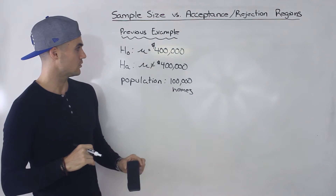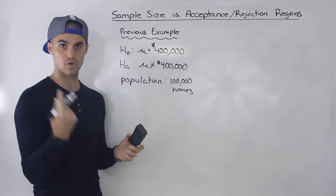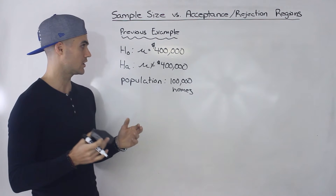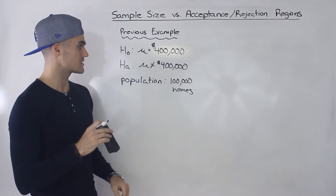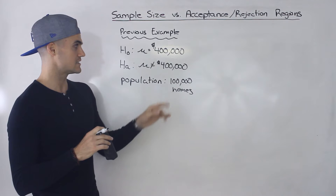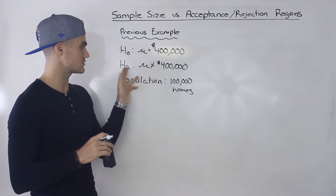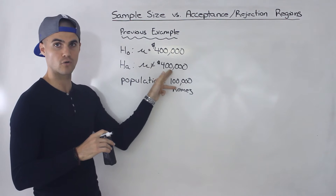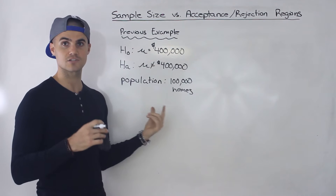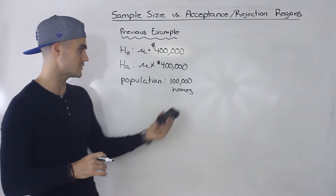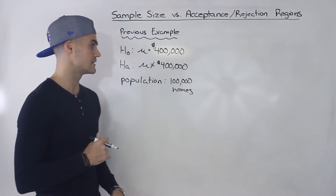In the previous example, we said that the null hypothesis for the average price of a home in a population in a country was $400,000 — that was the currently accepted truth. And we're going to be doing some hypothesis testing to see whether that's not true anymore, testing the alternative hypothesis where that average is not $400,000. In the population, we said there are 100,000 homes, so we don't have enough resources to go to all 100,000 — we have to take a sample.